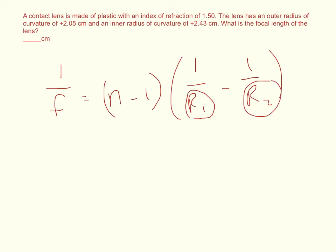To solve for f, the focal length, take all of this, n minus 1 times 1 over r1 minus 1 over r2, and take all of that to the negative 1 power, which gives you the inverse.